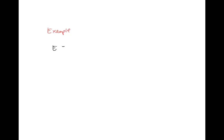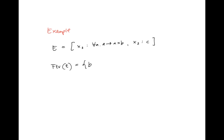An example is probably a good thing. If our type environment says that X1 has type for all A, A to A times B, and X2 has type for all A — then the set of free type variables in E: A is not free, B is free. And what free type variables do we have in X2? C is free. So it's B and C.